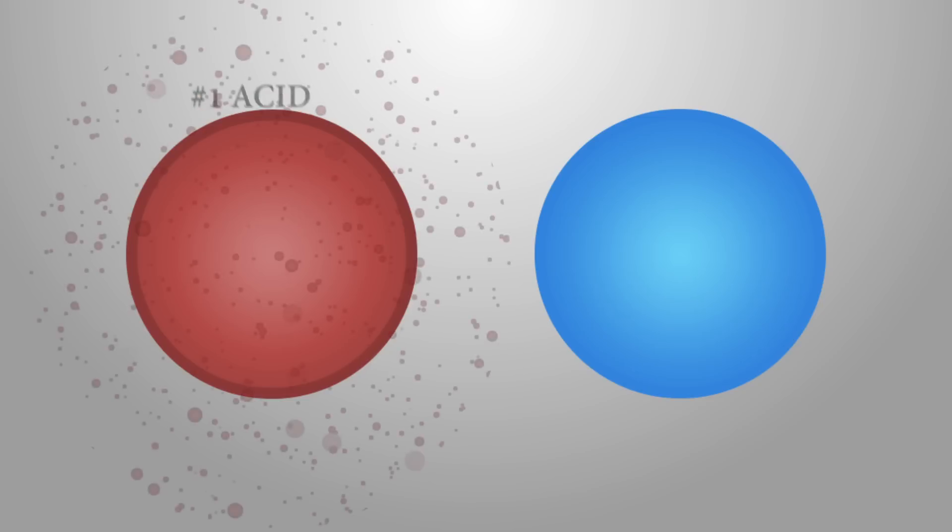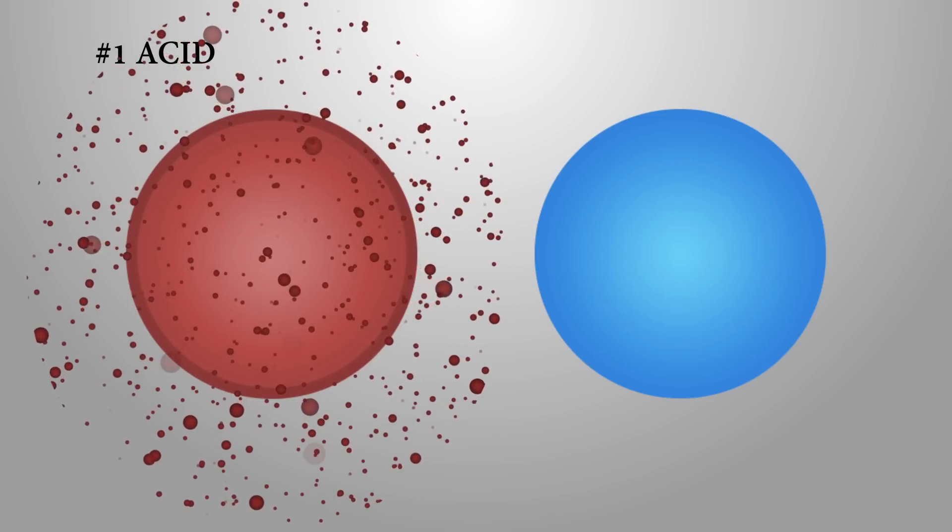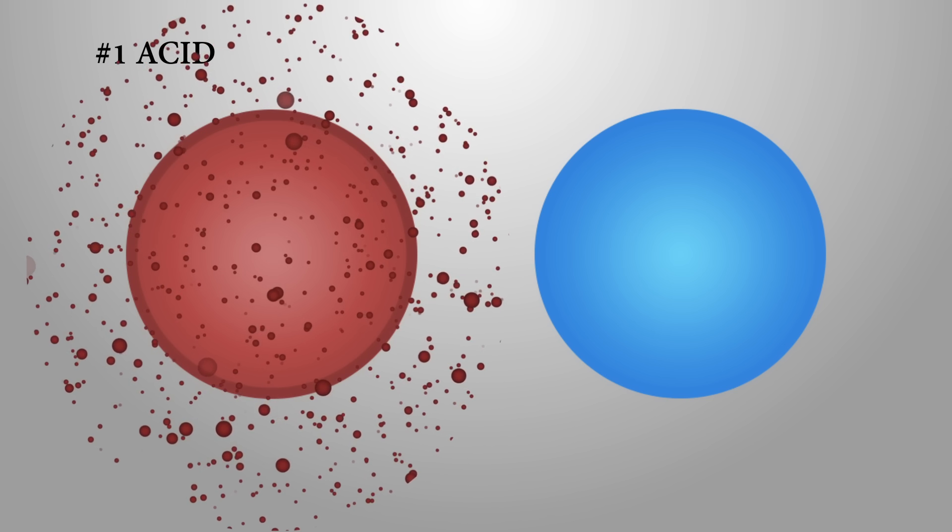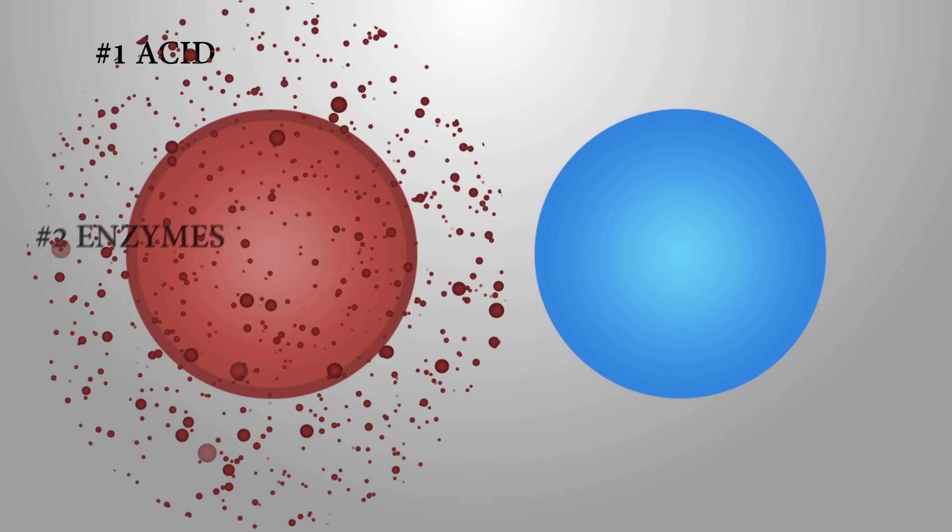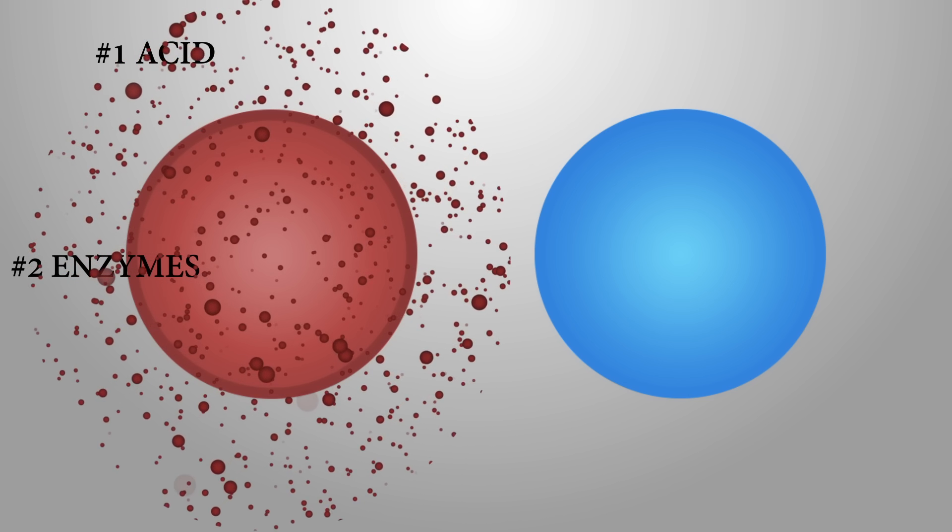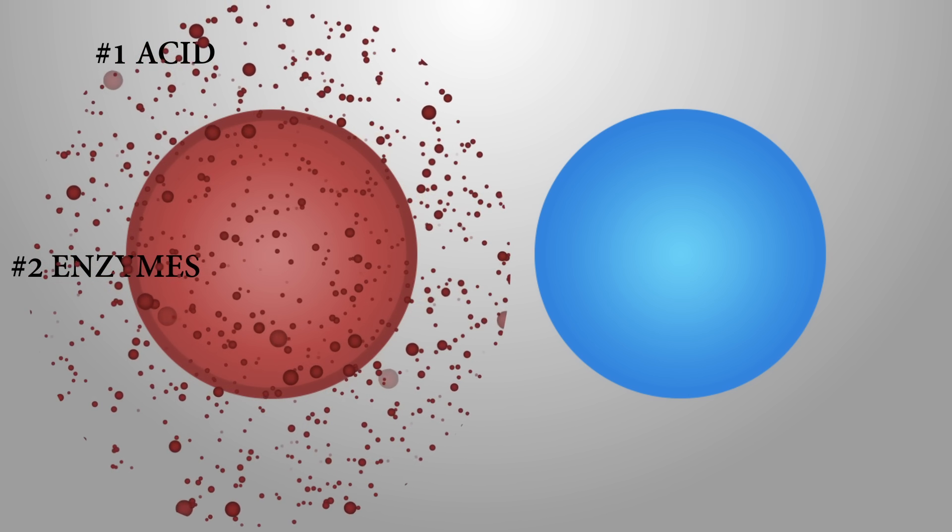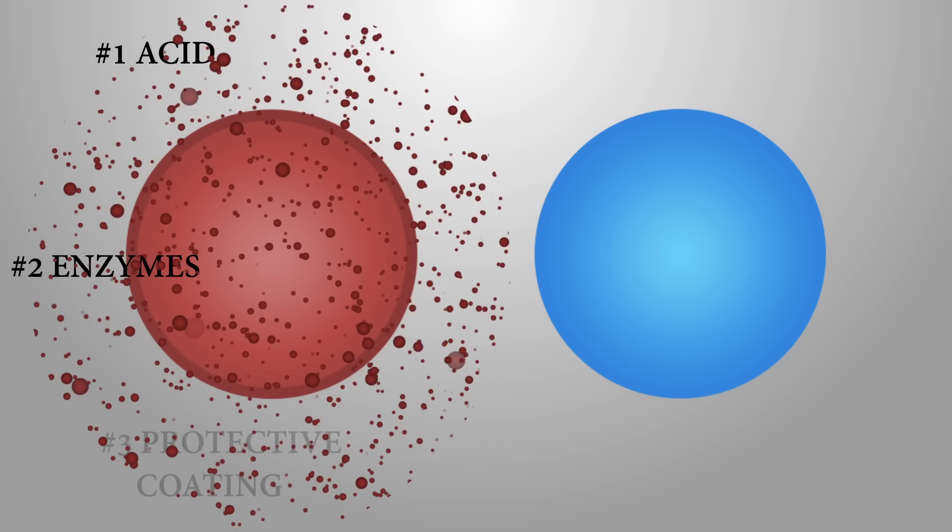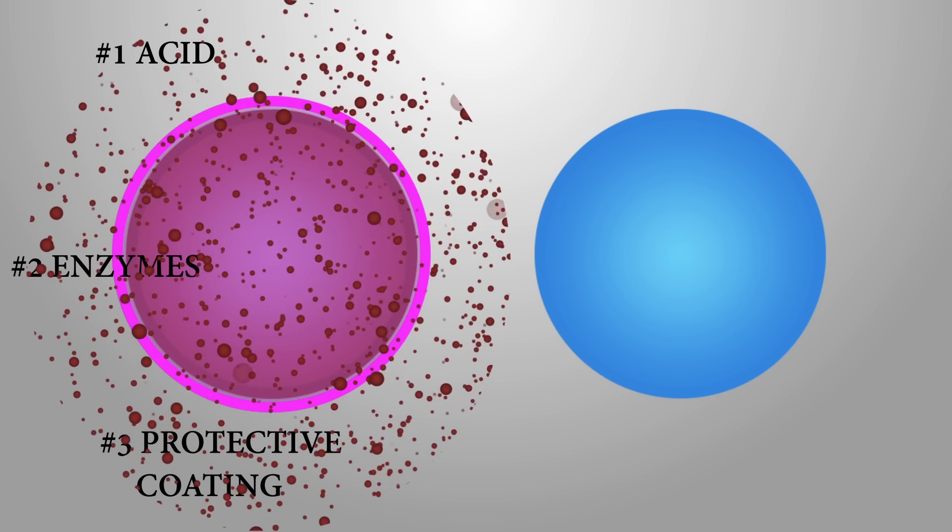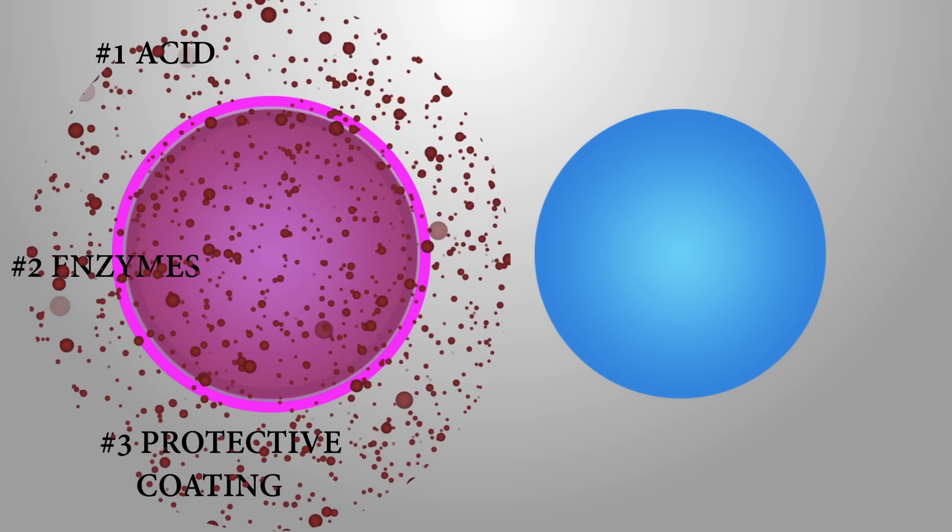1. Cancer cells excrete acid. Normal cells do not. 2. Cancer cells excrete enzymes. Normal cells do not. 3. Cancer cells form a protective coating against the acid and enzymes. Normal cells do not.